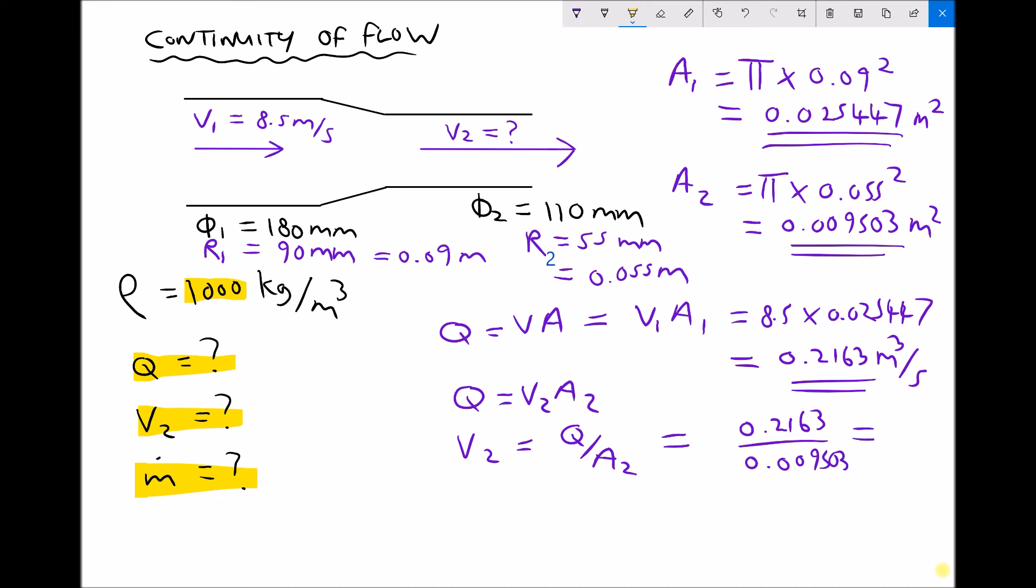And that will give me 0.2163 divided by 0.009503. Now once again, although I've written 0.2163 here, I'm going to use my calculator display which is 0.2162995.